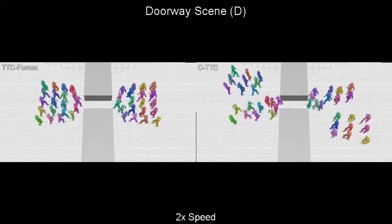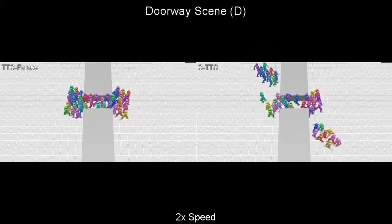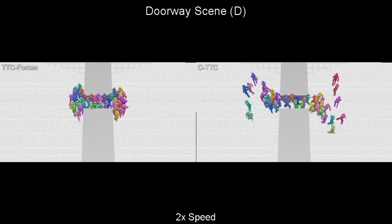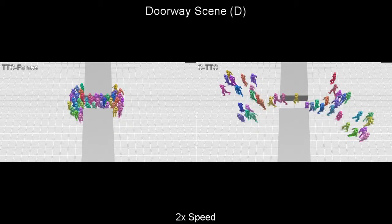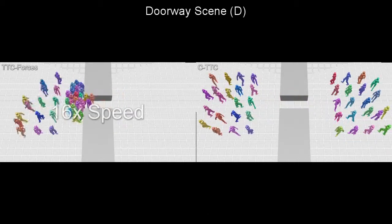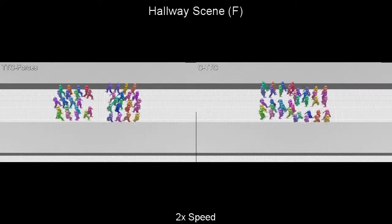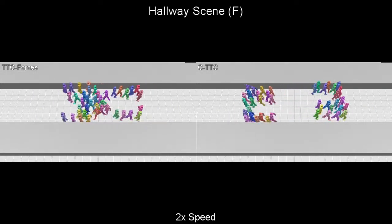Our algorithm, CTTC, produces paths that are coordinated and efficient in scenes where TTC Forces isn't. On the right is an example of the kind of coordinated paths it produces. On the left, TTC Forces is struggling in the same scene. Here is another example of CTTC performing better than TTC Forces.